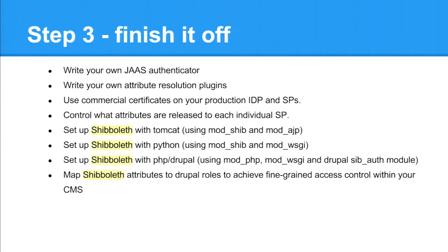Ultimately we wrote our own JAAS Authenticator to talk to our database system, and our own attribute resolution plugins that sent application-specific information back via SAML. You can also control which attributes are released to individual SPs using what's called an attribute filter in your identity provider - you can say I'm only going to release these particular attributes to these clients or to this URL. You're not giving up your crown jewels. If you're integrating with an untrusted third party, you might only want to release a few key credentials.